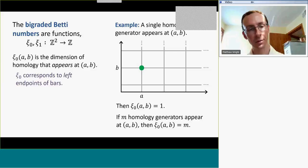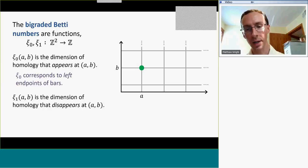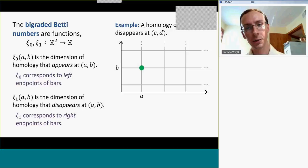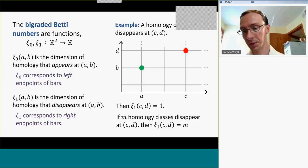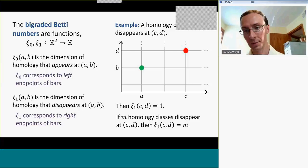ξ₁ on the other hand is the dimension of homology that disappears — that dies — at a given grade. These correspond to right endpoints of bars. So if there is a single homology class that disappears — a loop is filled in in the filtration — at grade (C,D), then ξ₁(C,D) is equal to 1, and we'll visualize that by drawing a red dot at (C,D). Likewise, if m homology classes all die at grade (C,D), then ξ₁(C,D) would be m. So we can think about ξ₁ as giving the count of the homology classes that die at each grade, and we'll represent these with green dots and red dots.